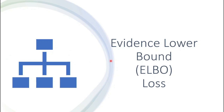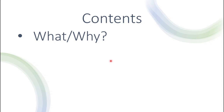Hello everyone and thank you for watching this video. Today we're going to talk about the evidence lower bound loss. This is a follow-up video for my previous video about the reparameterization trick, and in this video we'll talk about the loss function for the variational autoencoder model. More specifically, we'll talk about exactly what it is and why we use it.